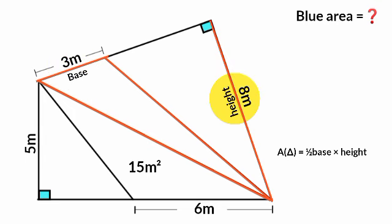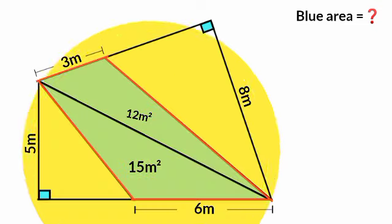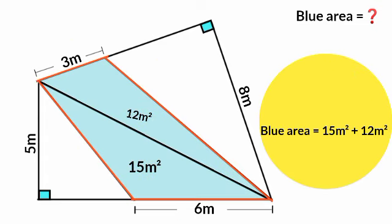this is its height. So its area is one-half times three meters times eight meters, which is 12 square meters. Now the area of the blue quadrilateral is the sum of these two triangles.